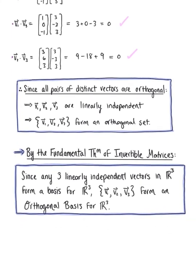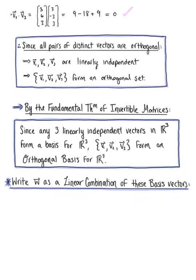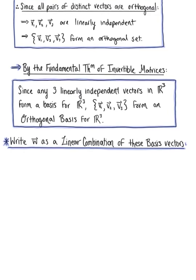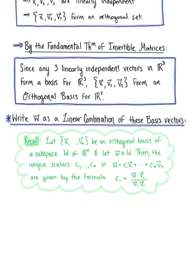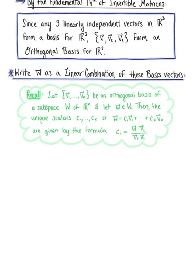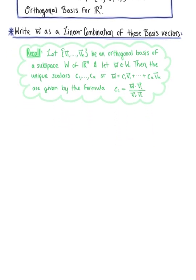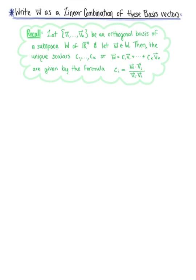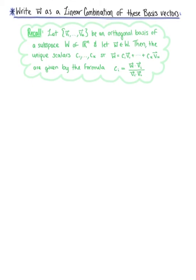The next thing we want to do is write vector w as a linear combination of these basis vectors. We recall that a theorem gives us a nice formula to compute the coordinates of vector w with respect to an orthogonal basis, defined as c sub i equals the dot product of vector w with vector v sub i divided by vector v sub i dotted with itself. This formula allows us to write vector w as a linear combination of the basis vectors and define the coordinates relative to our orthogonal basis.